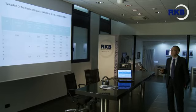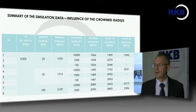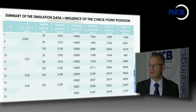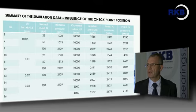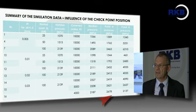Summarizing all the simulation data: the influence of the crown radius shows that bad designs produce pressure increases at both points A and B. The influence of the checkpoint value shows that the good design achieves median zone pressure very close to the Hertzian pressure, with only very small pressure increases at points A and B.